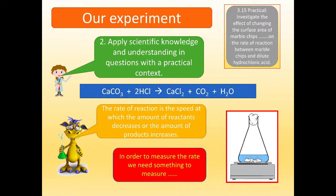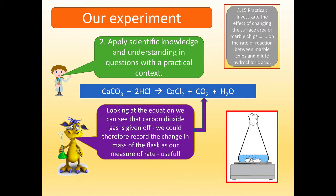Now, in order to measure the rate, we need to be able to measure something. Well, in this experiment we're very fortunate. Because look at the equation. We've got carbon dioxide being given off. So looking at the equation, we can see that carbon dioxide is given off. We could therefore record the change in mass of the flask as our measure of rate. And that's a jolly useful way of doing it.